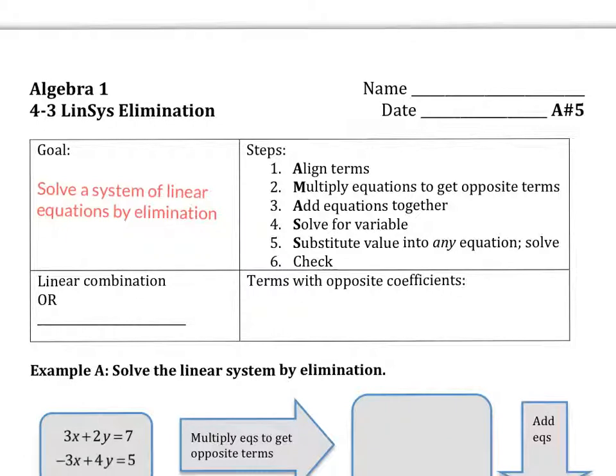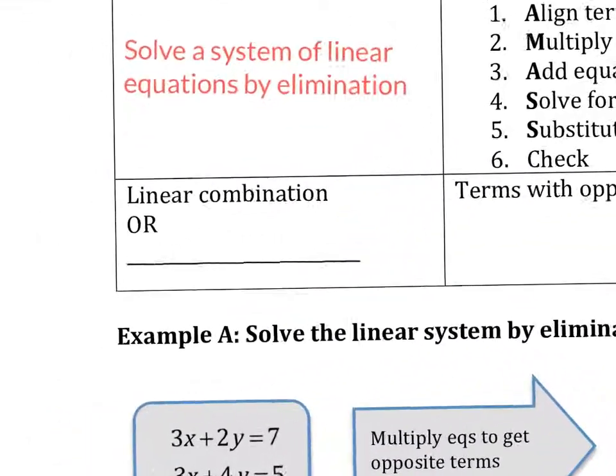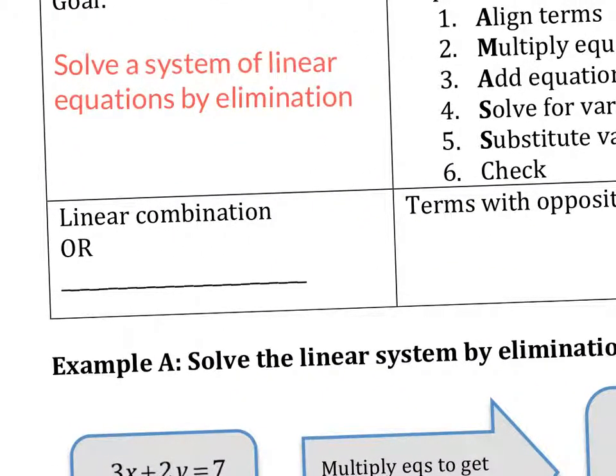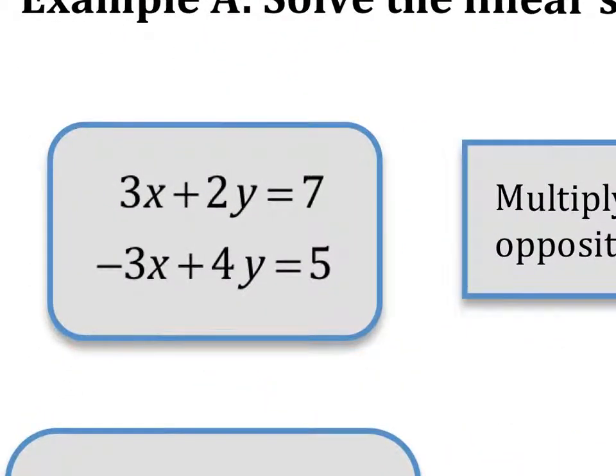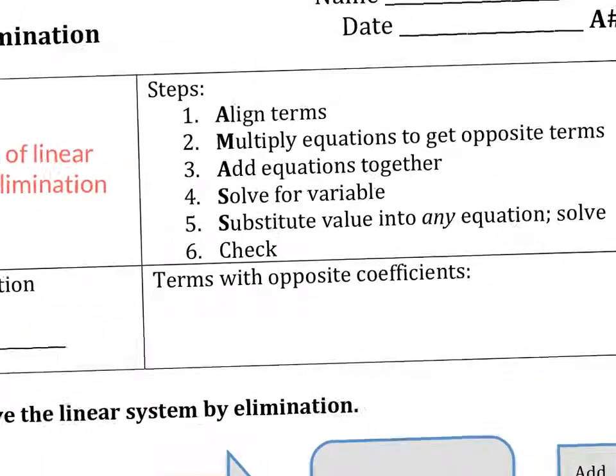So buckle up and get ready to rumble. Another name for elimination is linear combination. The reason for that is because as we add together some equations, in other words, as we combine the equations together, one of the variables is going to be eliminated, squashed, deleted. And if we have a system of linear equations, we have two variables and we say, how do we get the variables by themselves? Well, if we get rid of one of them, then we can get that variable by itself. So let's see what our steps are here.